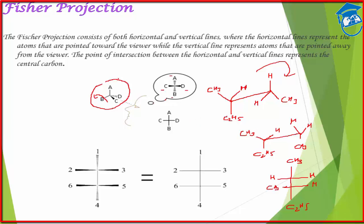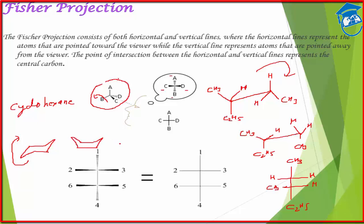Please note that conformers are not a type of isomerization because their energy barrier is too low — their existence depends on temperature, determining whether they are eclipsed or staggered. There is also relative stability to consider. For cycloalkanes — for example cyclohexane — there are various forms of conformers. The chair form is one conformer; if it rotates, you get the boat form. The chair form is more stable, the boat form is less stable with more repulsion.